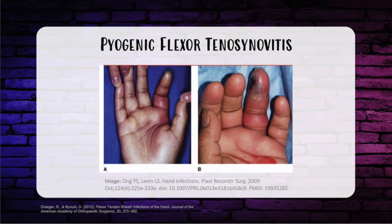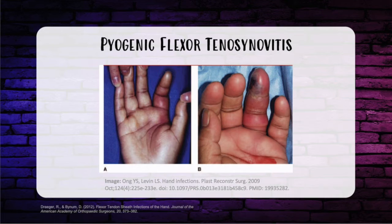Flexor tenosynovitis is a surgical emergency requiring incision and debridement. There are two techniques depending on disease extent: open versus closed. In the open technique, you make a long Bruner incision. In the closed technique, make a small incision on the proximal portion of the finger around the A1 pulley and also on the distal aspect, then irrigate the entire sheath with an angiocath.